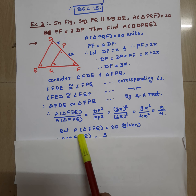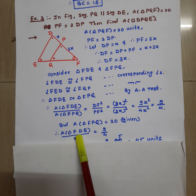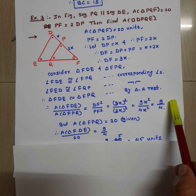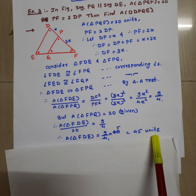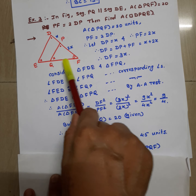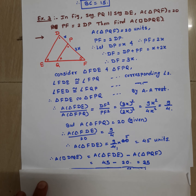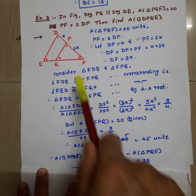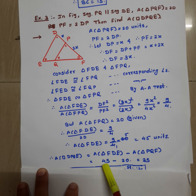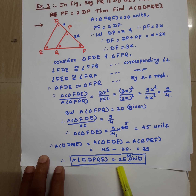The area of triangle FPQ is given as 20, so substituting: area of triangle FDE upon 20 is equal to 9 upon 4. By cross multiplication, area of triangle FDE is equal to (9 upon 4) × 20, which equals 45 units. The area of the bigger triangle is 45 and the smaller triangle is 20. Therefore area of quadrilateral DPQE equals area of triangle FDE minus area of triangle FPQ: 45 minus 20 equals 25 units.